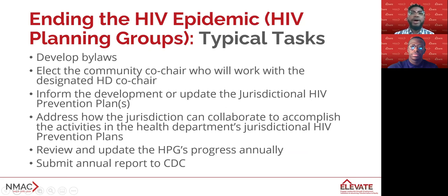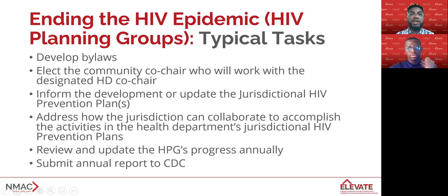Similar to other community planning councils and bodies, the EHE HIV planning groups are responsible for developing bylaws and procedures, including criteria for the selection of its members. Ensuring that there is representation of those affected by and living with HIV, it is vital that the group members are able to equally participate and carry out planning tasks or duties in the planning process. To do so, health departments and HIV planning group members are to provide a thorough orientation for new members. The planning tasks include selecting a community co-chair who will work with the health department co-chair, informing the development of or updates to the health department's jurisdictional HIV prevention plan and engagement process, identifying how the jurisdiction may collaborate to accomplish activities outlined in the plan, and reviewing its process and progress each year, noting any challenges and changes needed.